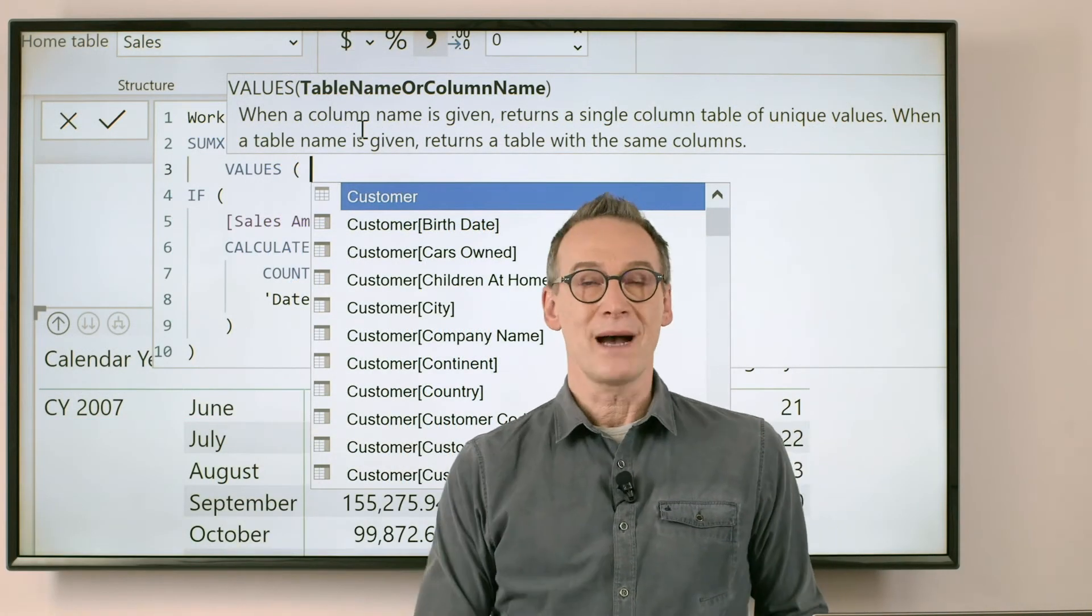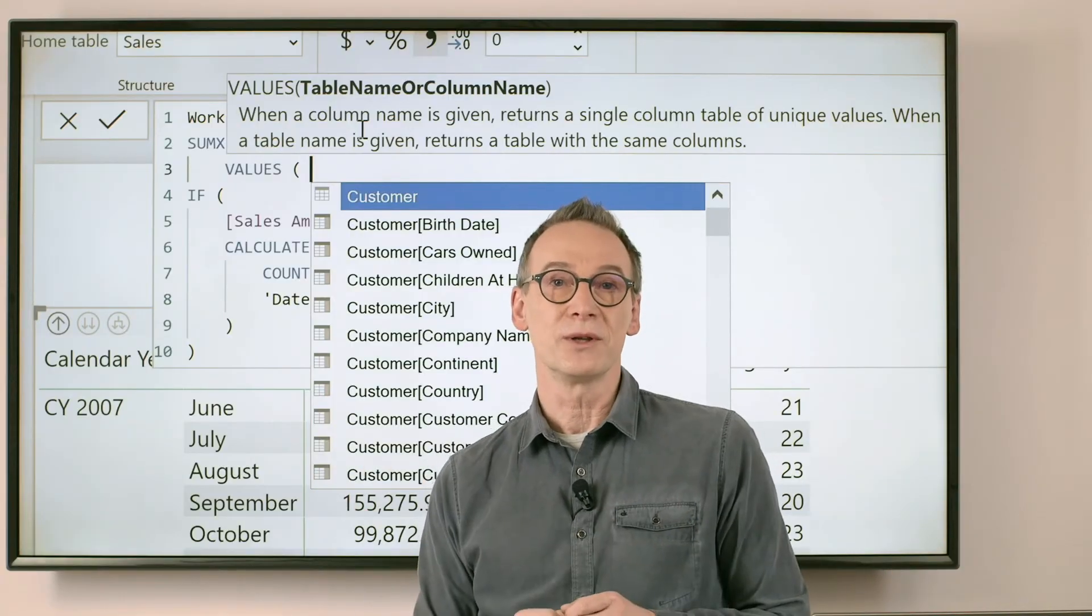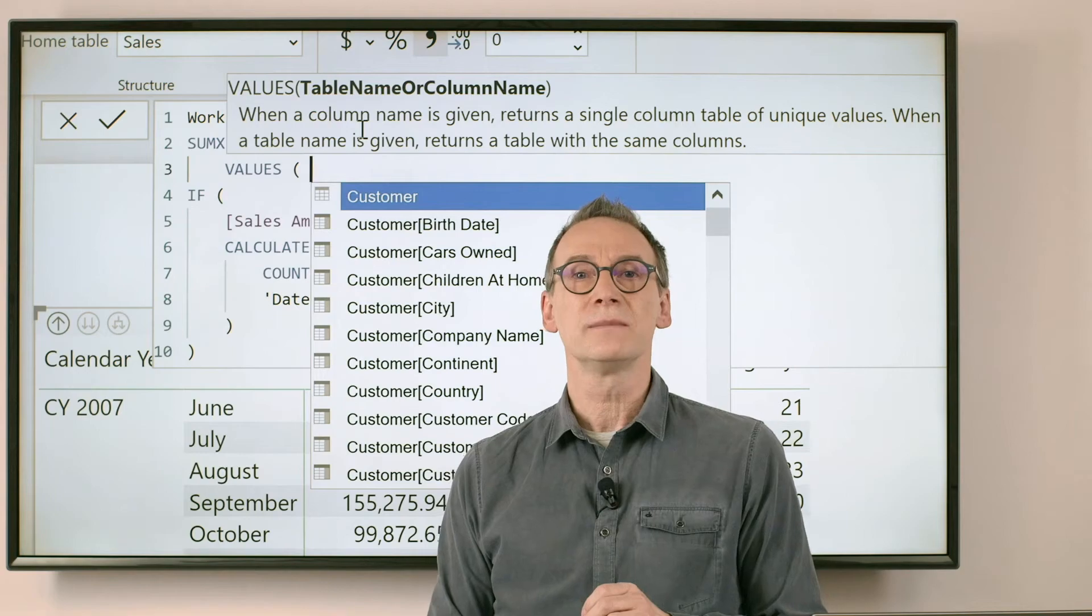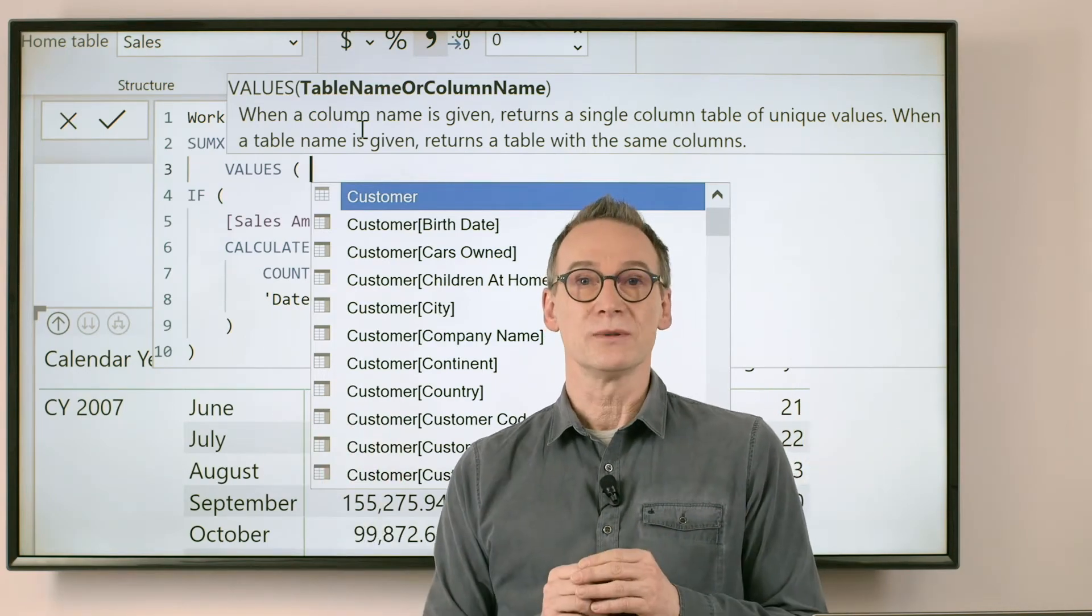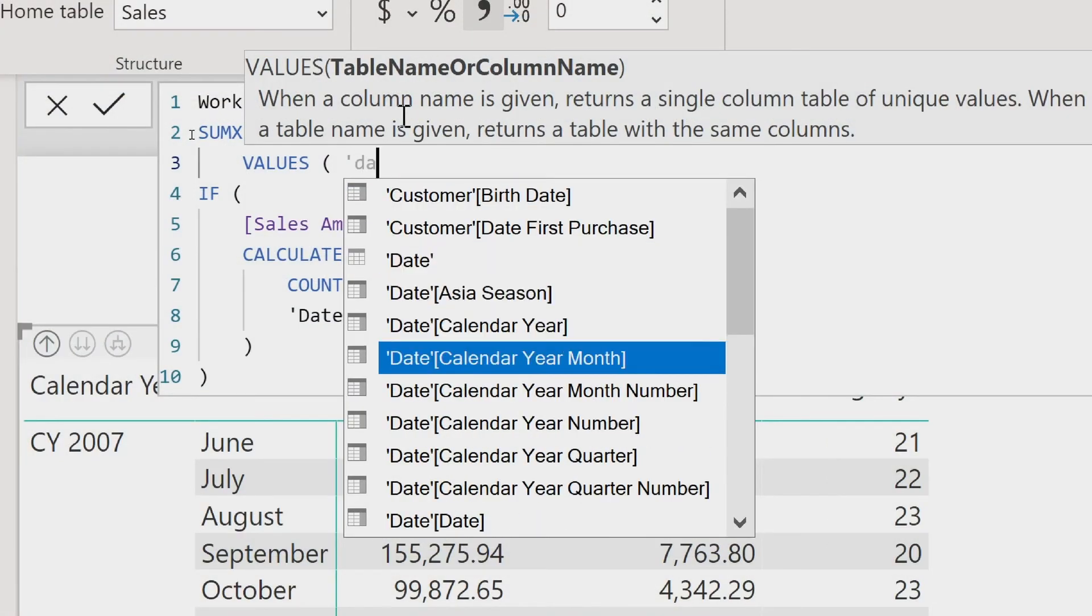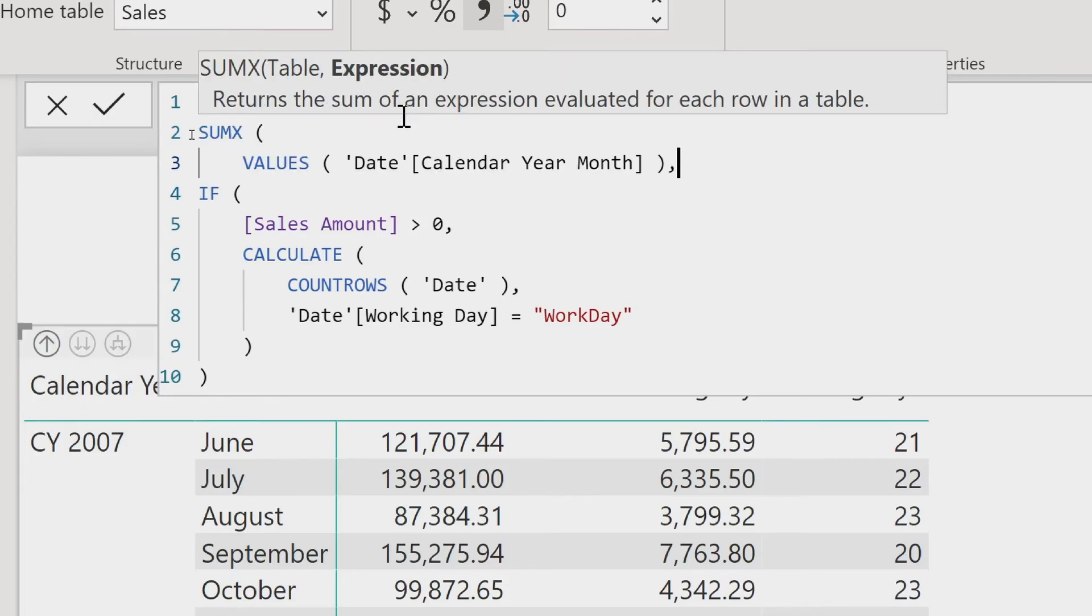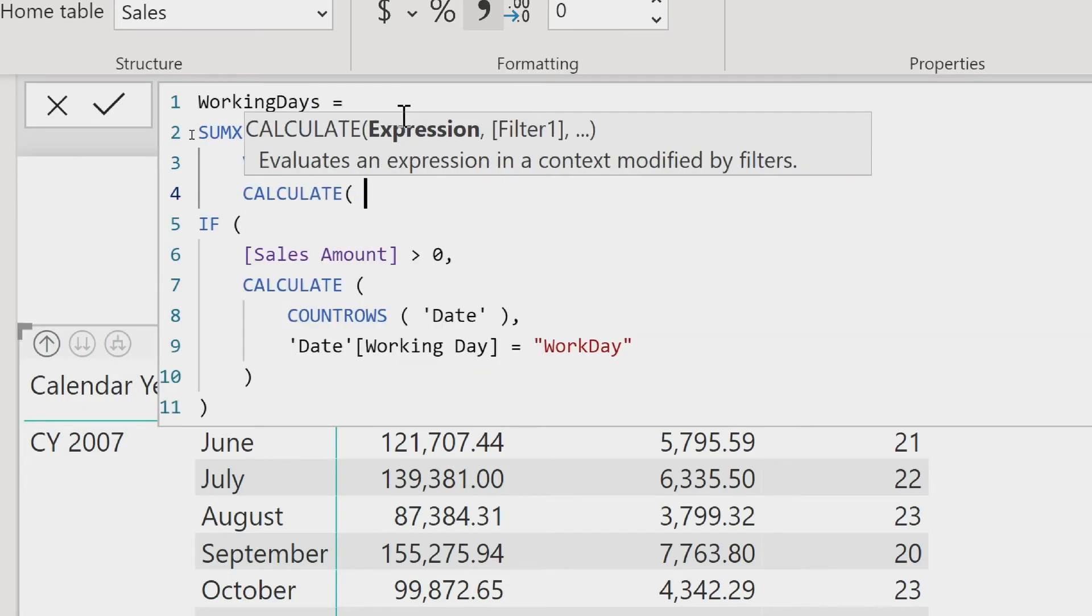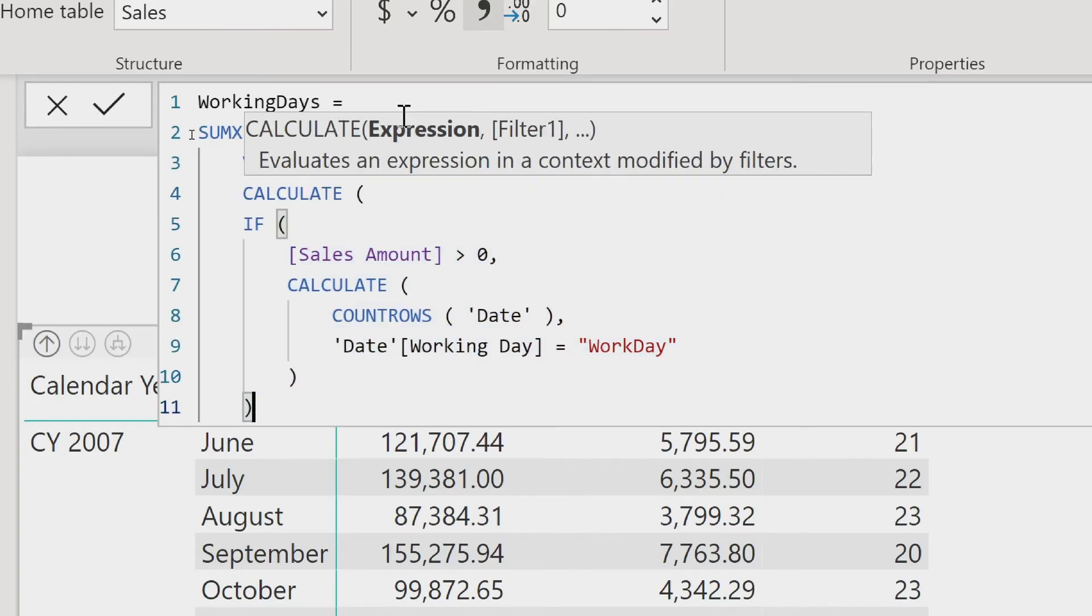Well, in my report, I have the month, but in order to make sure that it will work also across multiple years, I would like to use a column that contains both the year and the month in the same column, so that I will always iterate on different values. So I iterate over the values of calendar year month, and then I use CALCULATE to perform context transition, and force the entire calculation to only the current month.